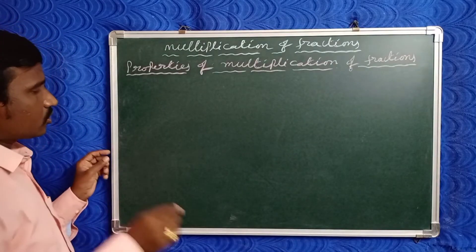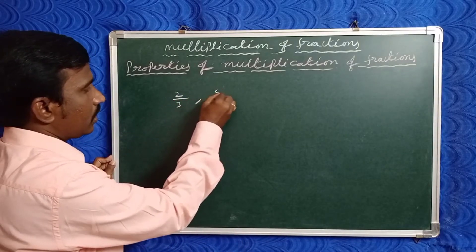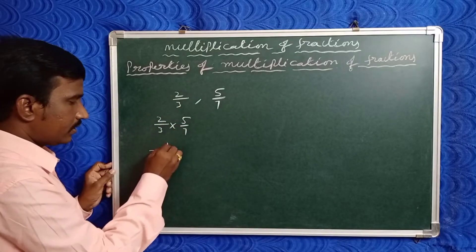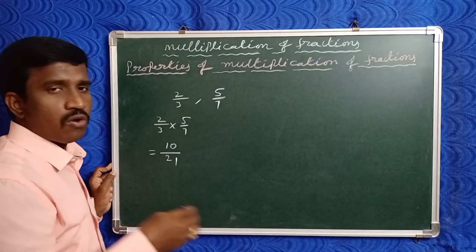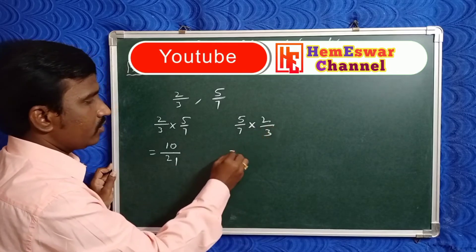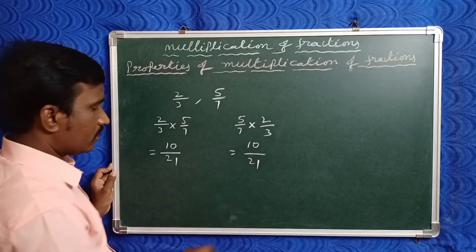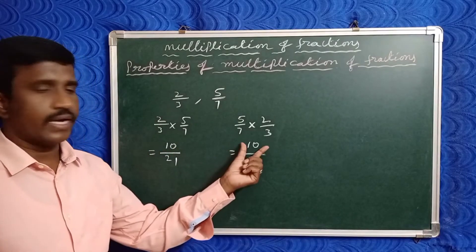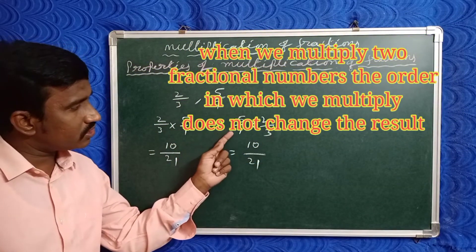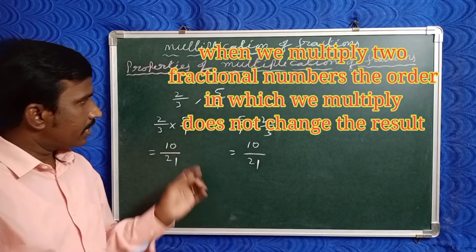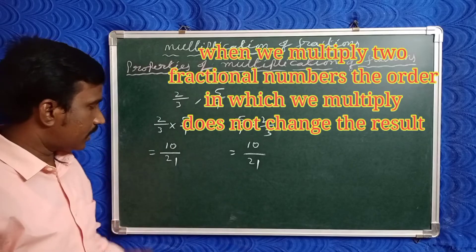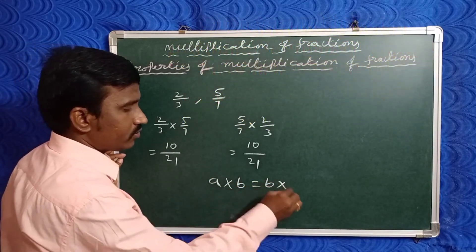Third property: suppose given two fractions, two by three and five by seven. First multiply two by three into five by seven: numerators two fives are ten, denominators three sevens are twenty-one, giving ten by twenty-one. Now multiply in reverse order: five by seven into two by three — five twos are ten, by seven threes are twenty-one, giving ten by twenty-one. Both results are equal. So the product of two fractions irrespective of order gives the same result: a into b equals b into a. This is the commutative property.